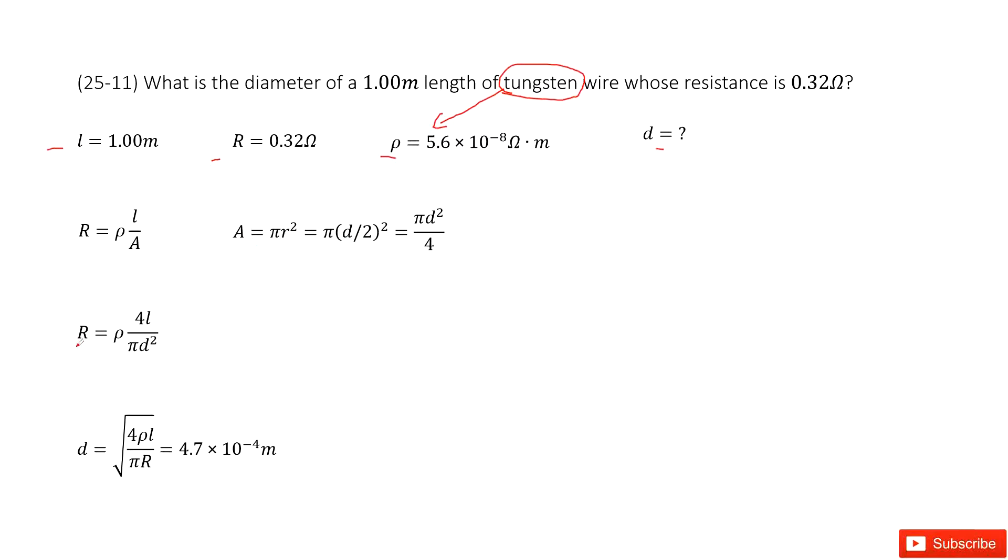Then we input A inside. We get an equation that looks like this one. From this equation, we convert it to get the function for d. We can see d is the square root of 4 rho L divided by pi R. And we input the given quantities rho, L, and R to get the answer. Thank you.